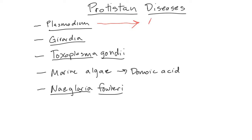The plasmodium forms — anyone know what disease it causes? Malaria. Malaria used to be a worldwide prevalent disease which killed millions and millions of people each year. Now it's more localized to tropical regions. It used to be in the U.S. as well — anyone play Oregon Trail and died of malaria? We'll go over the life cycle of malaria in a second.